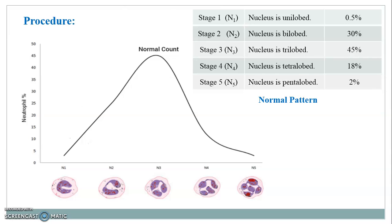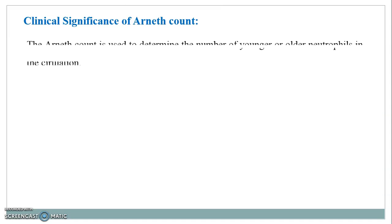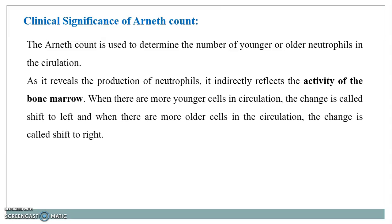Any shifting of this normal graph has clinical significance. The Arneth Count is used to determine the number of younger or older neutrophils in circulation. As it reveals the production of neutrophils, it indirectly reflects the activity of the bone marrow. When there are more younger cells in circulation, the change is called shift to the left; when there are more older cells, it is called shift to the right.